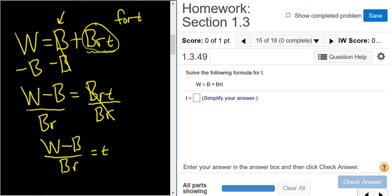And that's the final answer. You can write it backwards and make it look better. You can write it as t equals w minus b over br. That's maybe a better way to write the answer. But either is okay. Hope that helped.